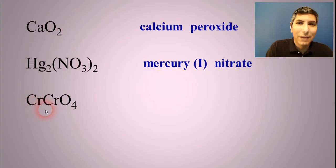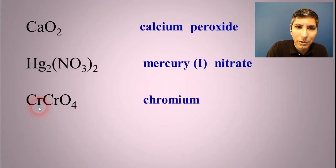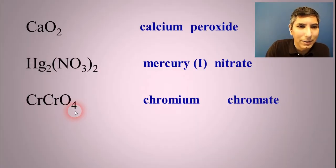Here's one that looks a little bit unusual. We have Cr, CrO4. Well, the Cr right there is, of course, chromium. And then CrO4 would be the chromate polyatomic ion.